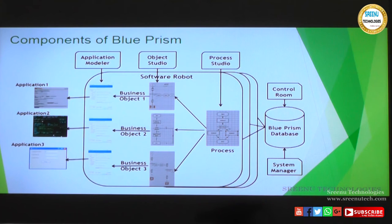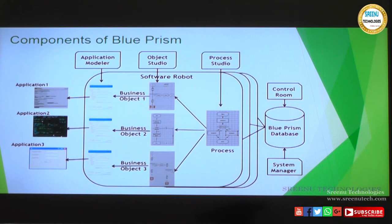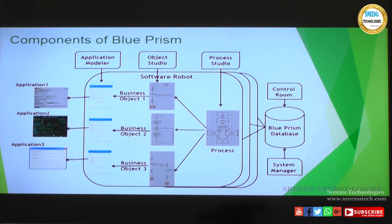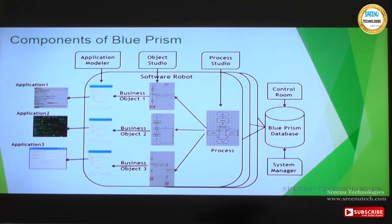As we say, we can automate a business process with Blue Prism. For example, think there are three applications on the left — one is a desktop application like SAP, calculator, or Outlook; the middle one is a mainframe application; and one is a web application. These are the applications that a process needs to interact with — this is the current manual process. In Blue Prism, the software robot consists mainly of two things: process studio and object studio. Object studio is the interface for the process to interact with the application.